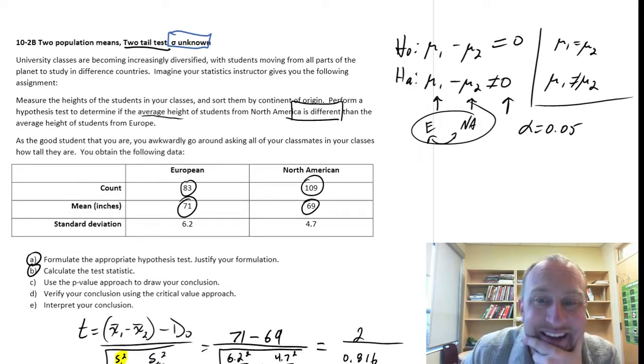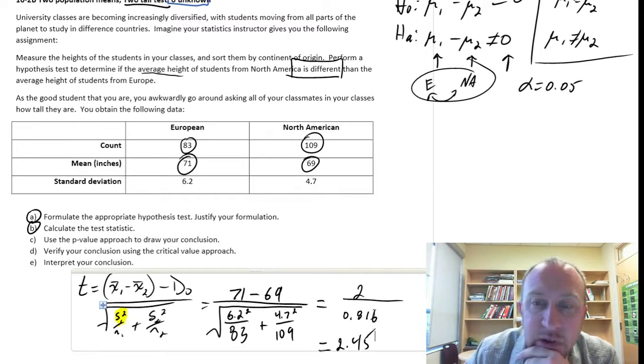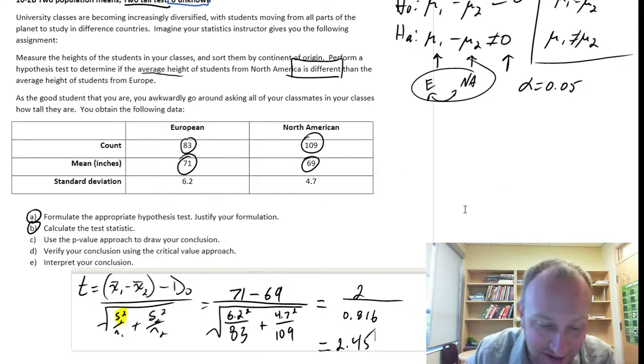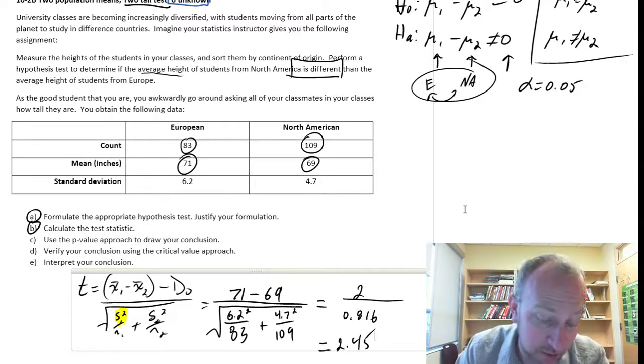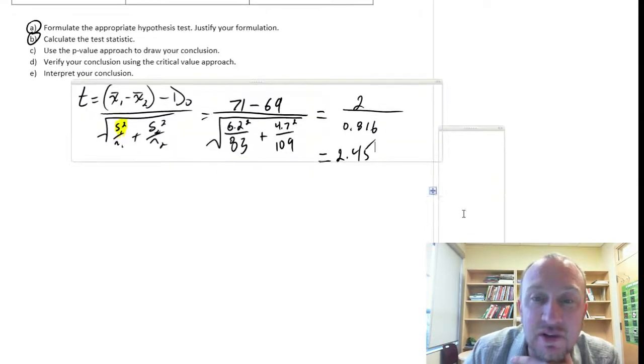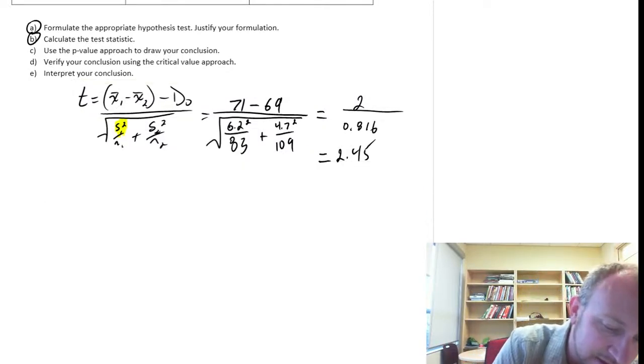The next step for a t-test is to figure out our degrees of freedom. Because we have no reason to assume that the variances are equal—it doesn't tell us anywhere in the data or the problem to assume that population variances are the same—we need this big, ugly formula that you may have seen once before.